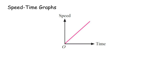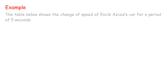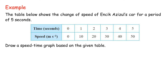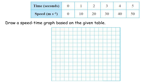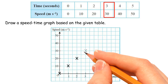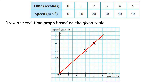Draw a Speed-Time Graph. A speed-time graph can be drawn if the following information about the motion is obtained: A. a Speed-Time Table, or B. an equation that represents the relationship between speed and time. Example: The table below shows the change of speed of a car for a period of 5 seconds. Draw a speed-time graph based on the given table. Solution: A. Choose appropriate scales for speed and time. B. Plot each pair of values on graph paper. C. Join the plotted points using a ruler to obtain the speed-time graph.